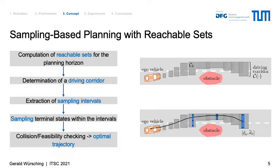After that, we extract sampling intervals from the driving corridor, shown as the highlighted blue areas within the different sets of the driving corridor. We then sample the terminal states of the trajectories within those intervals, represented by the black dots in the image. Finally, we obtain a generated set of trajectories which we use for collision and feasibility checking. For each trajectory, we check whether it collides and whether it is kinematically feasible, and we obtain an optimal trajectory — shown in black — using a predefined cost function.